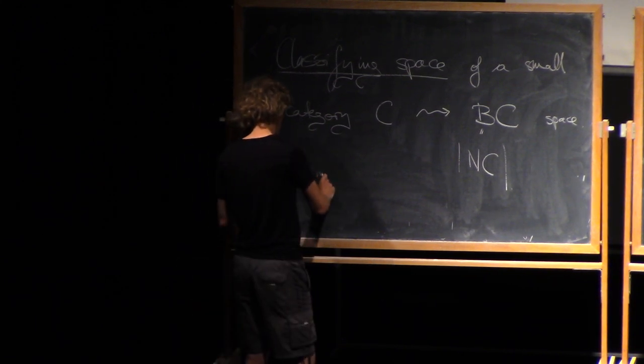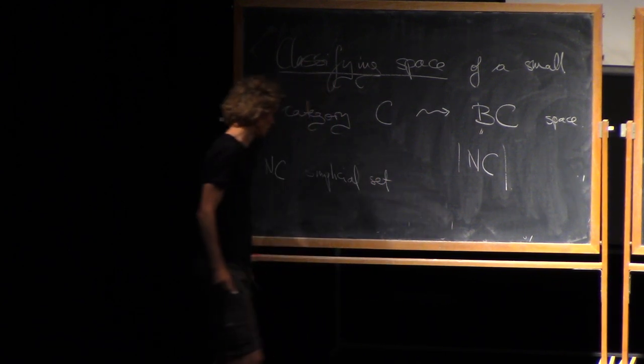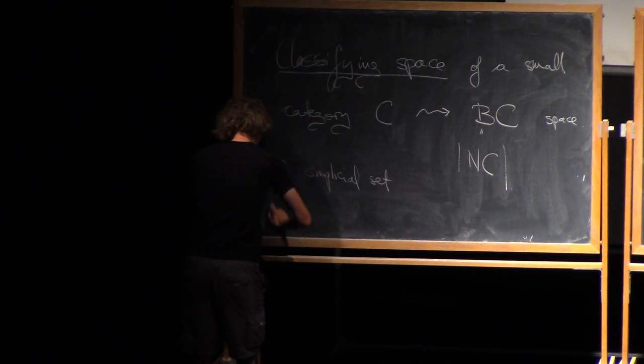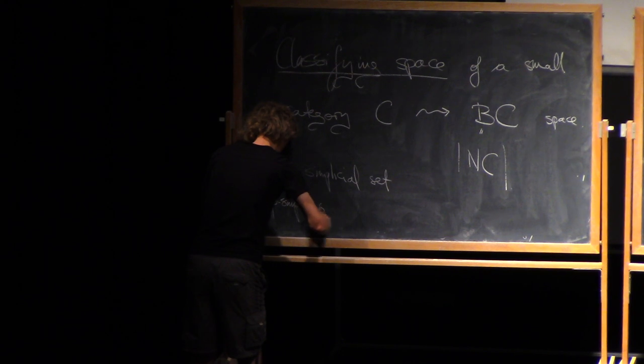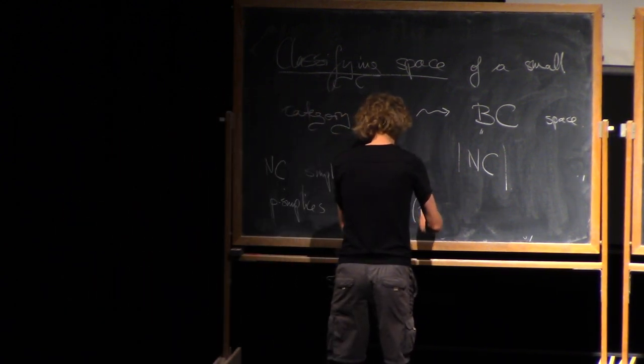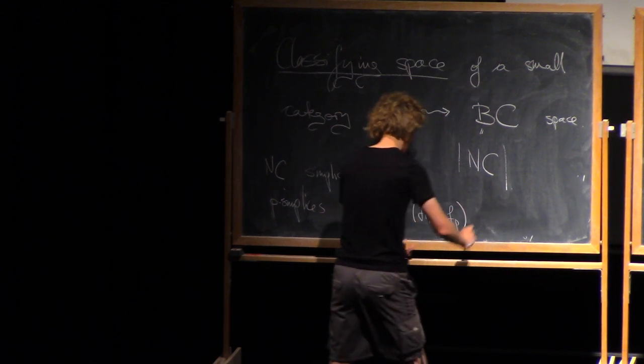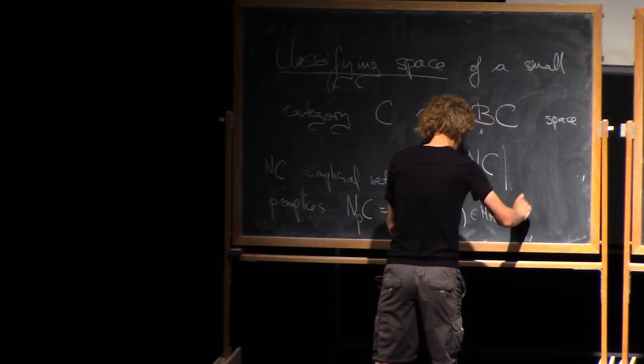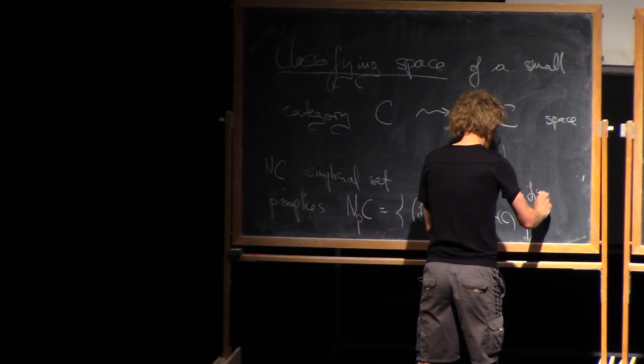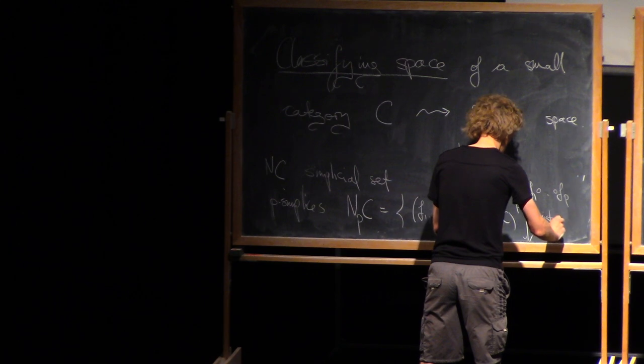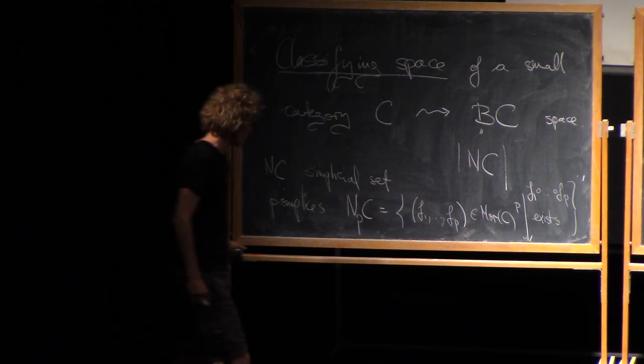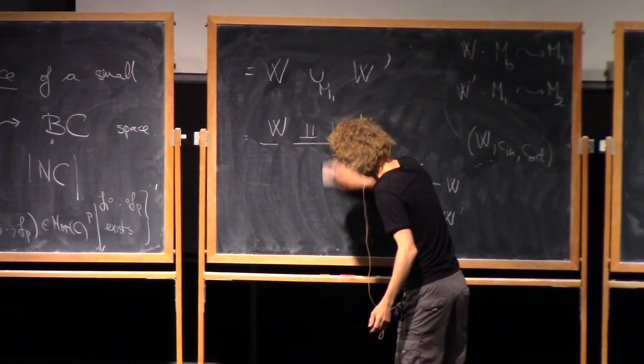Where the nerve of C is a simplicial set. So the p simplicial set - so the target of F1 should be the source of F2, and so on. Let me abbreviate that to F1 composed with up to Fp exists. N0 just means the objects. N1 means the set of all morphisms in C. And so on.